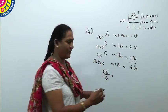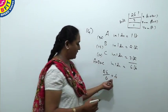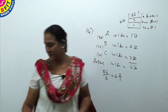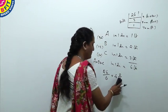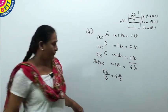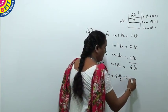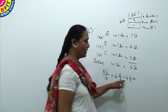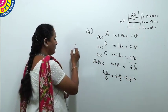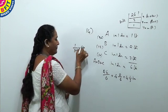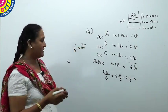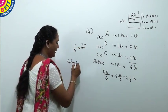6 times 4 is 24, quotient is 4, remainder is 2. So 4 and 2 by 6, or 4 and 1 by 3 hours. 4 hours and 1 third of hour. What is 1 third of hour? Multiply it with 60, it is 20 minutes. After 9, the tank is filled in 4 hours and 20 minutes.